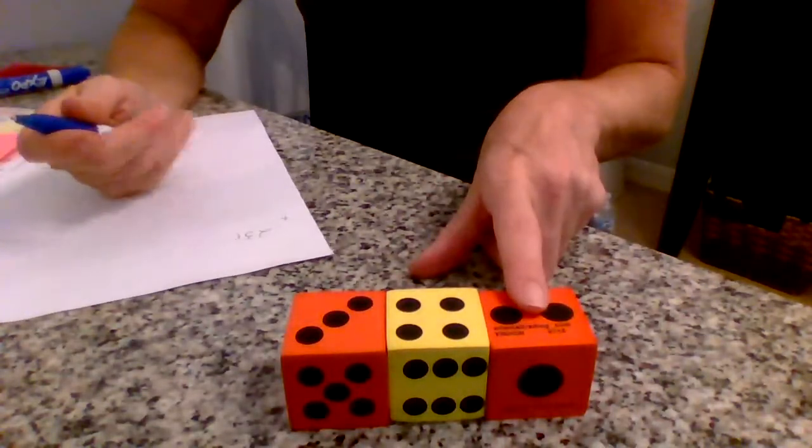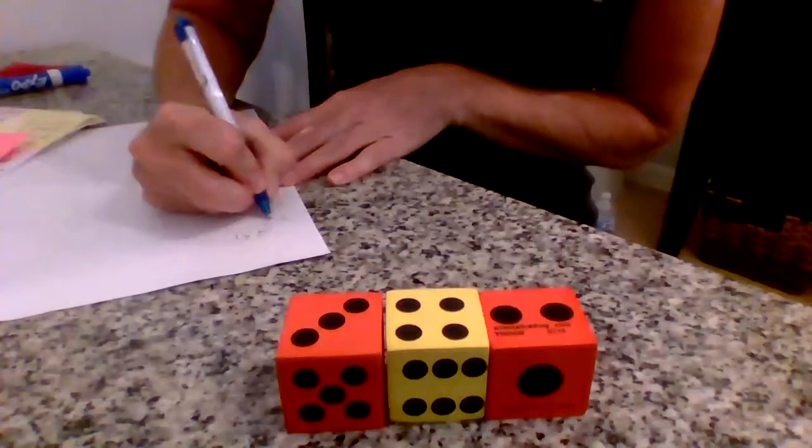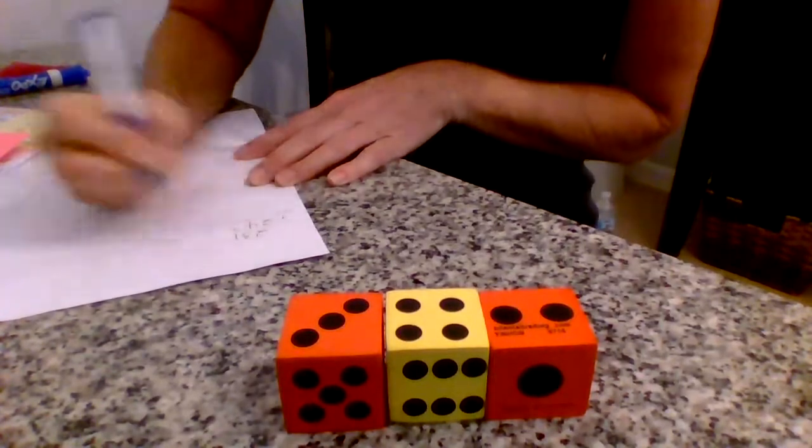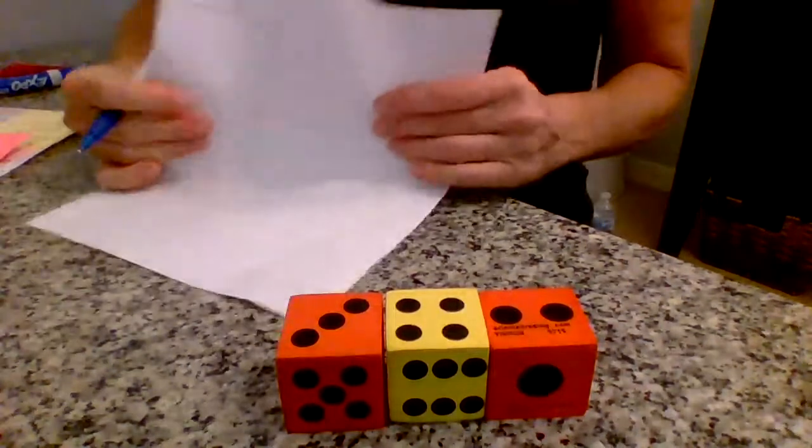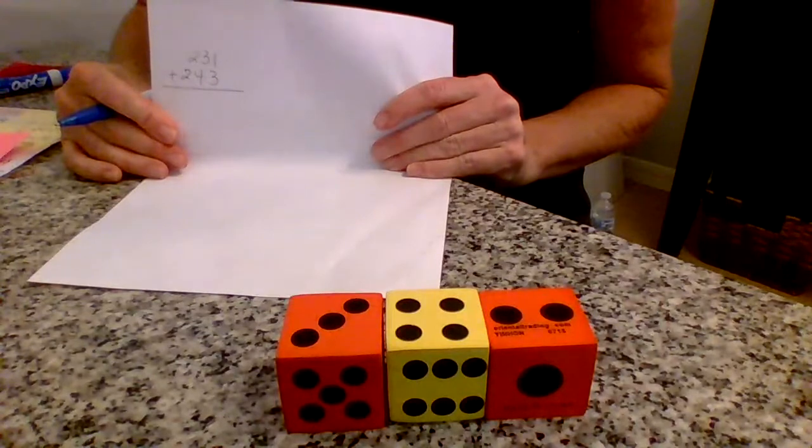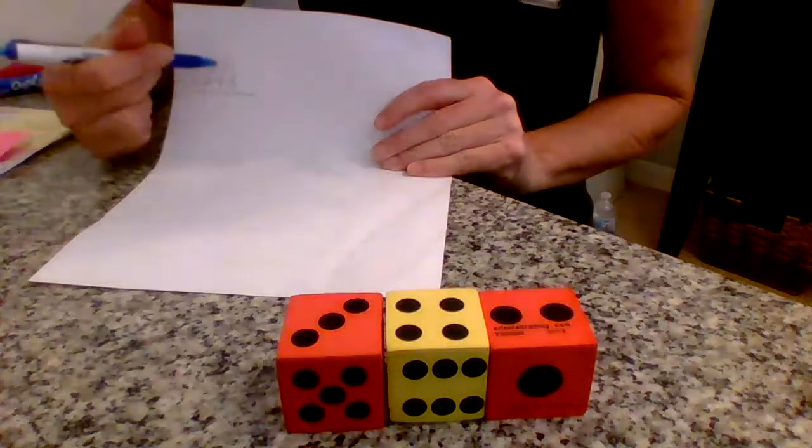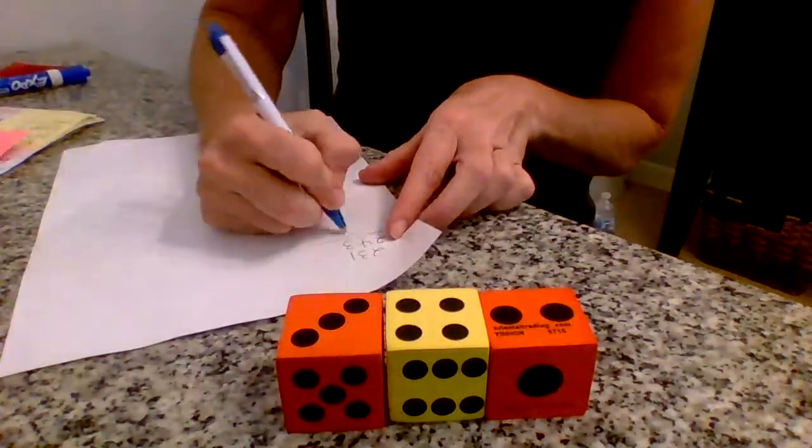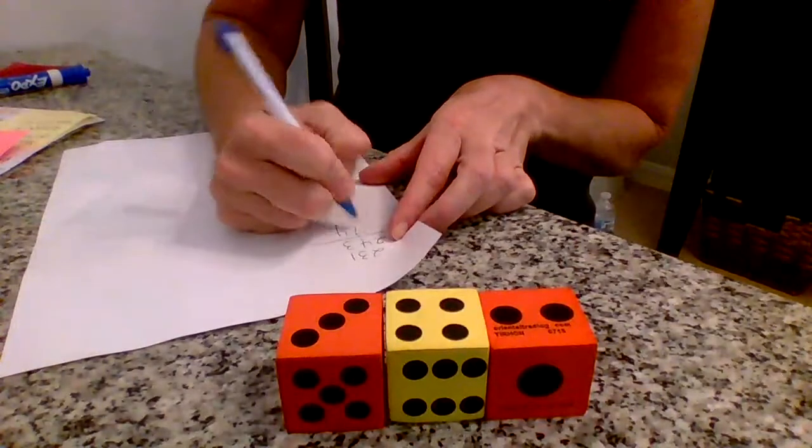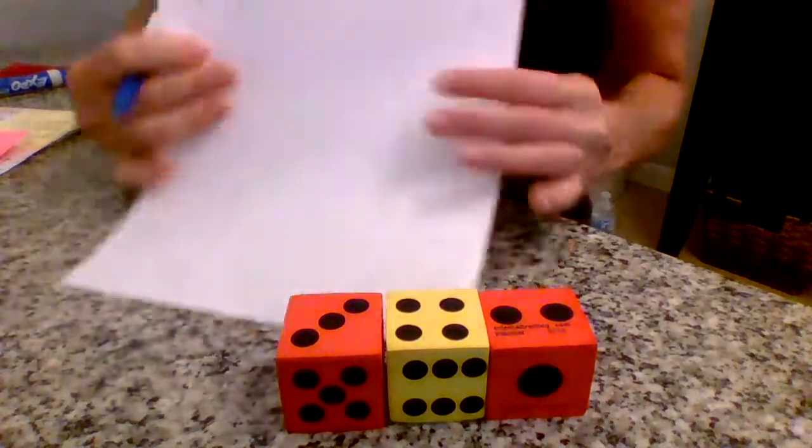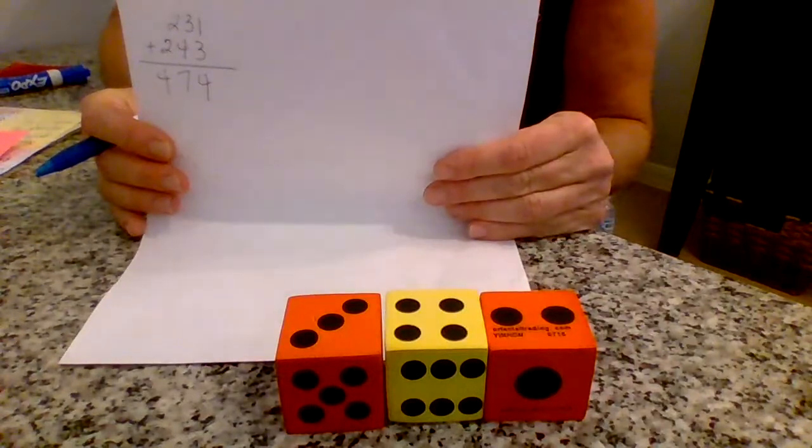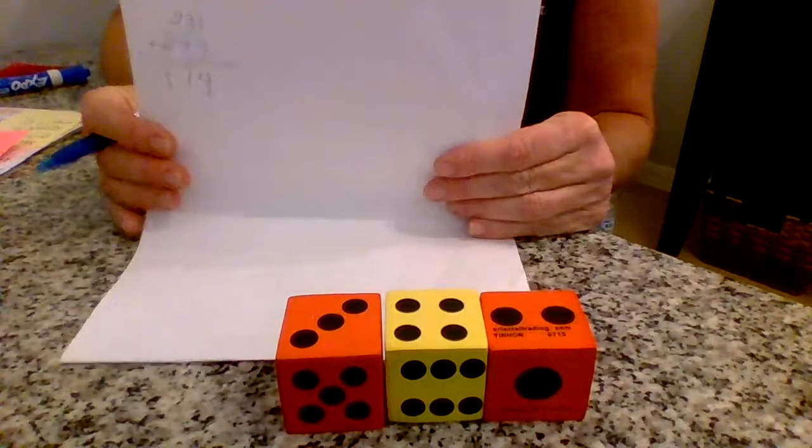Okay, and then I can add that problem. I start with the ones: 3 plus 1 is 4, 4 plus 3 is 7, 2 plus 2 is 4. So you can use the dice.